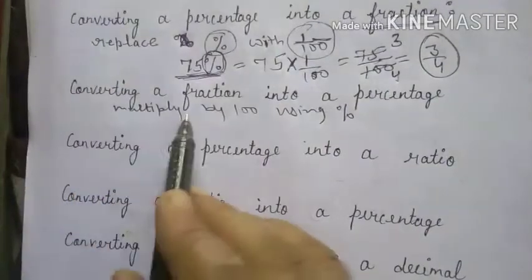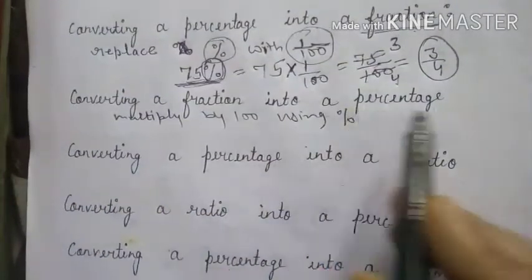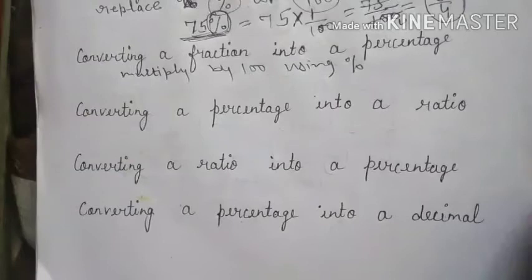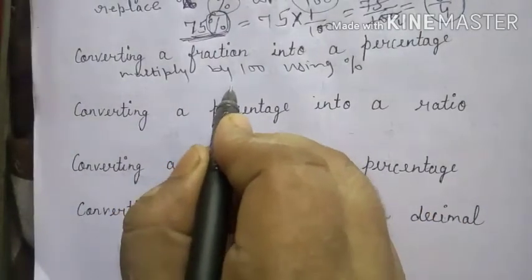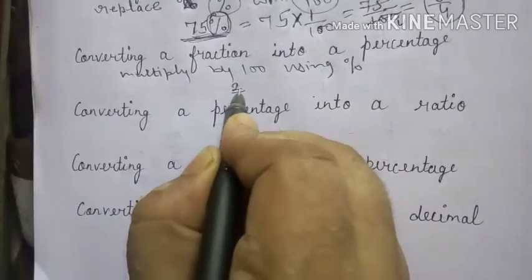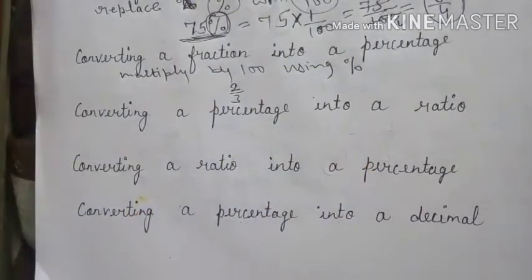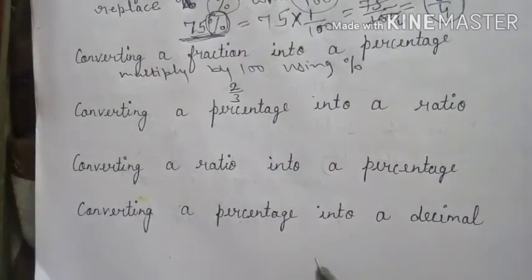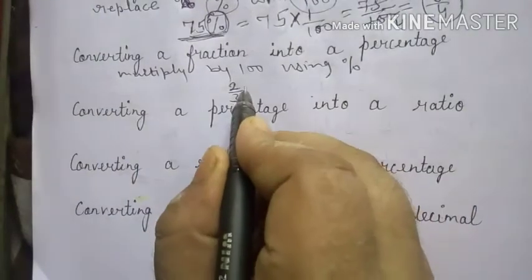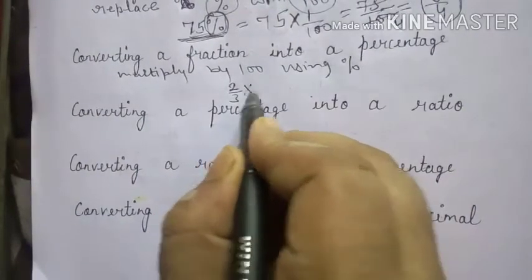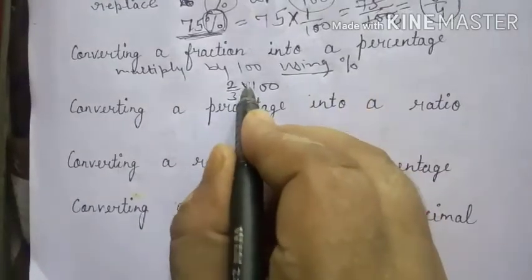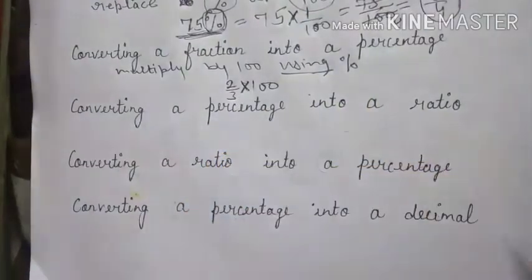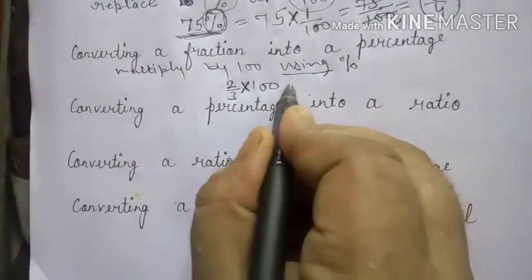Now, converting a fraction into a percentage. If there is a fraction 2 upon 3 and we have to convert it into percentage, we multiply the number by 100 and use the percent sign. We can also write the result in mixed fraction form.